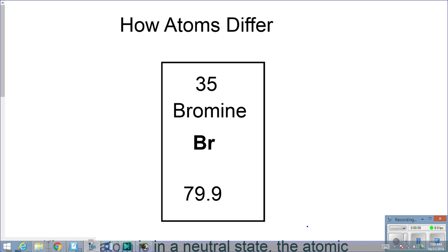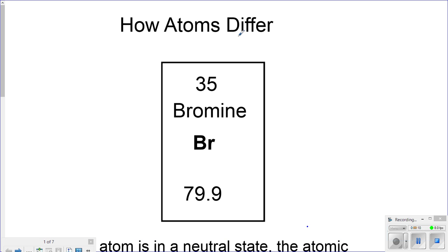In the example here of elements being different, we have the element Bromine. If you notice, it has a few things.